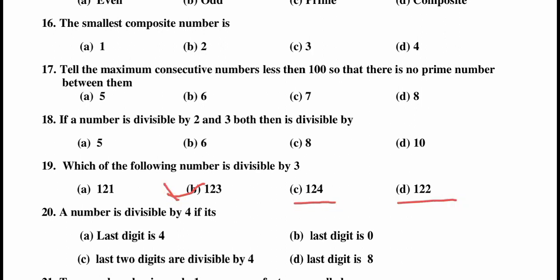Question number 20: a number is divisible by 4 if — (a) last digit is 4, (b) last digit is 0, (c) last two digits are divisible by 4, or (d) last digit is 8? The divisibility rule of 4 is that the last two digits should be divisible by 4. So the answer is (c).